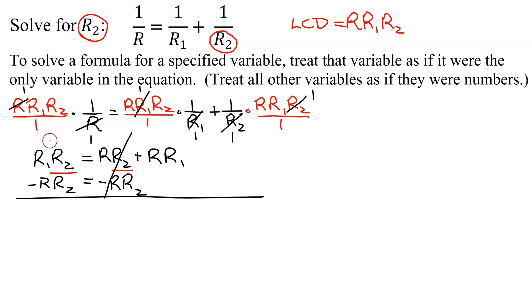And if you look on the left-hand side, can I combine these two terms? No, they're unlike terms. So I just have R1, R2, minus R times R2, equals, the only thing left on the right-hand side, is R times R1.